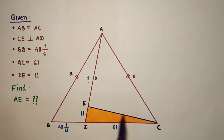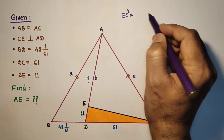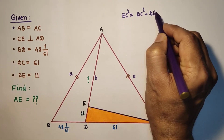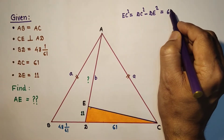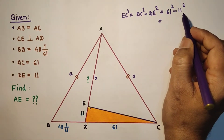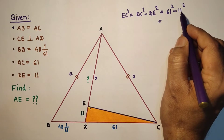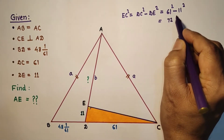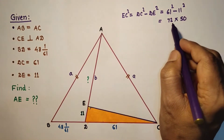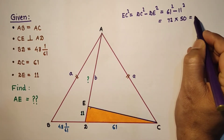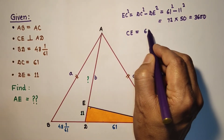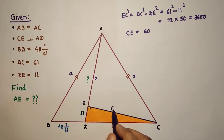Using Pythagoras theorem in triangle DEC: EC² = DC² − DE² = 61² − 11² = (61 + 11)(61 − 11) = 72 × 50 = 3600. Therefore CE = √3600 = 60 units.